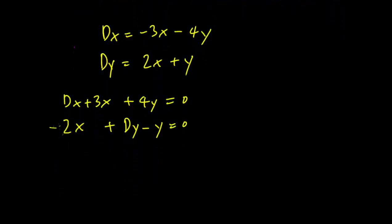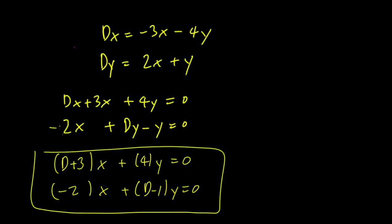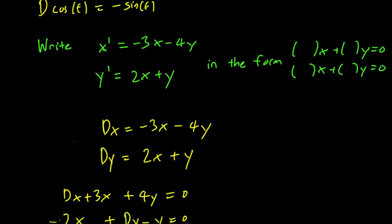And the last step is to factor things out. So we end up with (D+3)x + 4y = 0 and (-2)x + (D-1)y = 0. And this is a solution that is exactly of the form that the problem asked for.